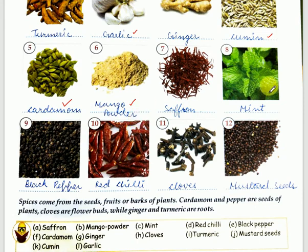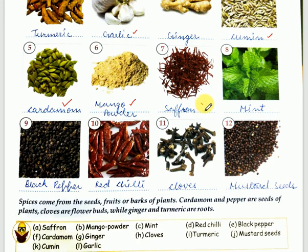Seventh one — you can see it is red in color and a very thin material. So it is saffron. It is mostly grown in Kashmir. It adds a very nice and tasty flavor to the food.